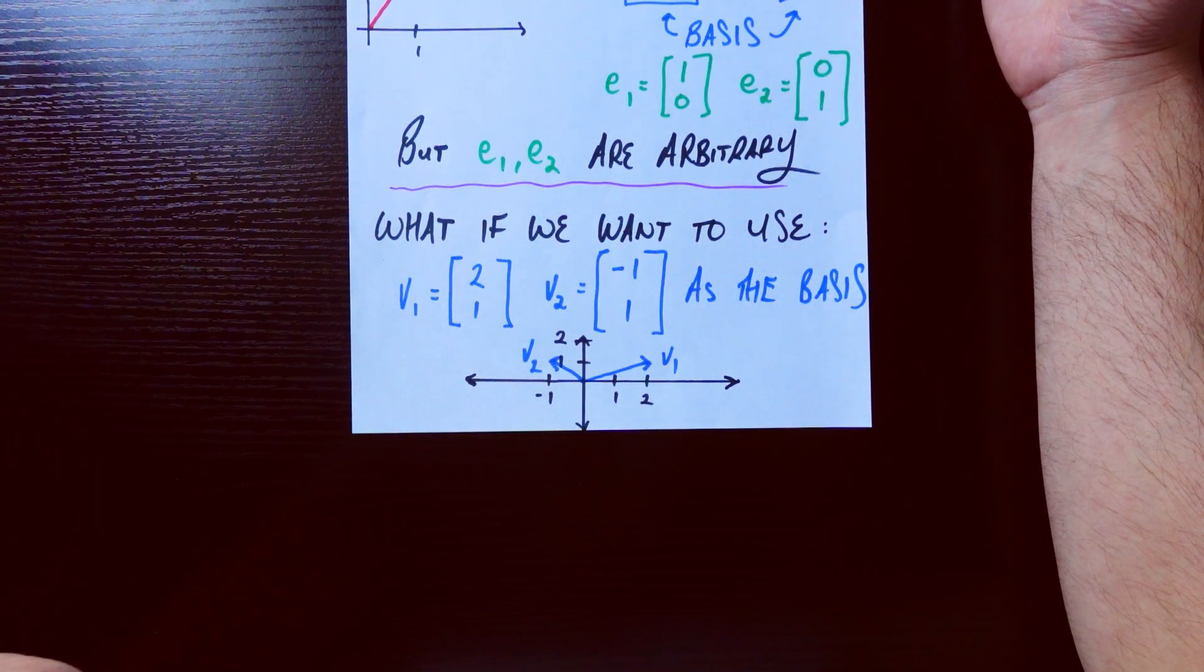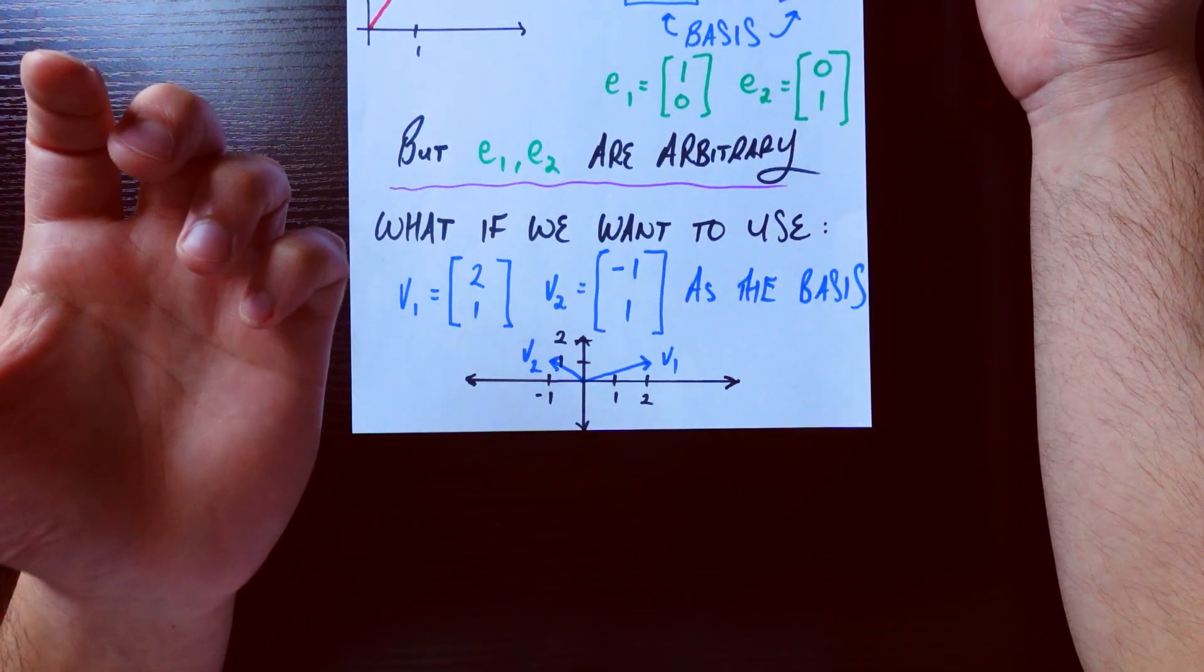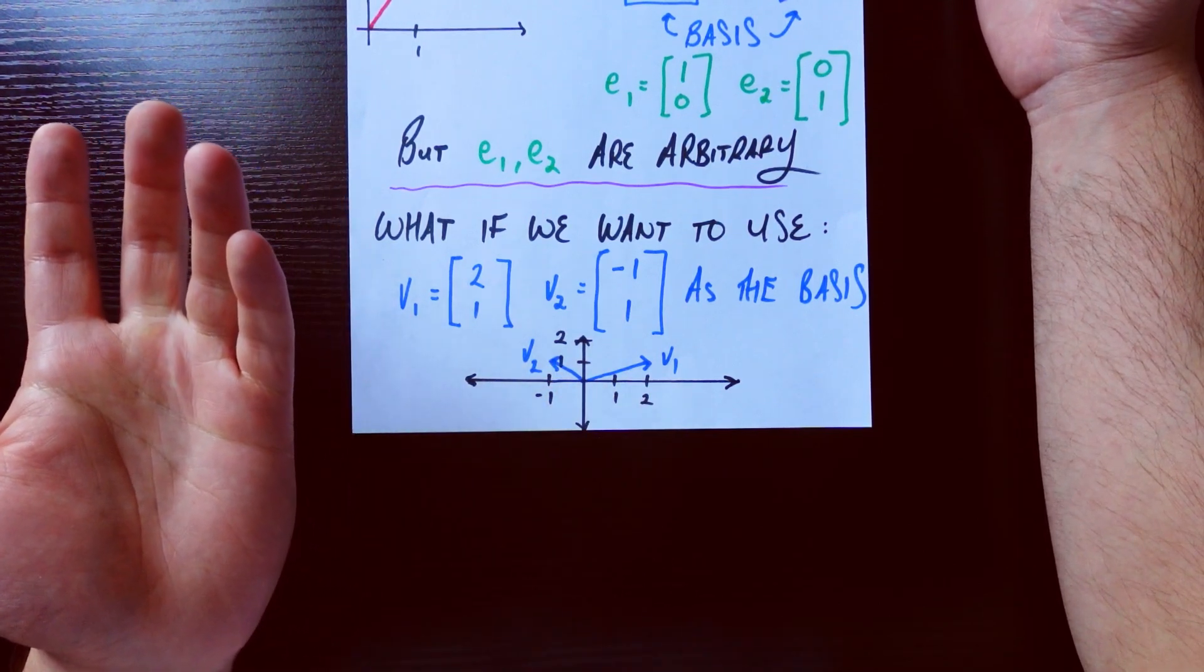What that means in a less technical language is that if I have any vector in this two-dimensional space, I can uniquely represent it as some linear combination of these two vectors, and that means that I can use this as my basis just as well.